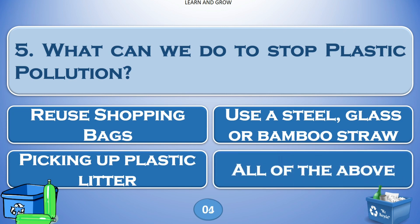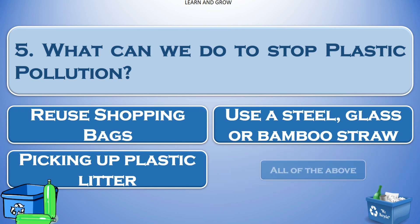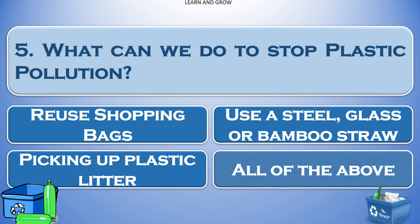What can we do to stop plastic pollution? Options: A) reuse shopping bags, B) use a steel glass or bamboo straw, C) pick up plastic litter, or D) all of the above. The answer is all of the above.